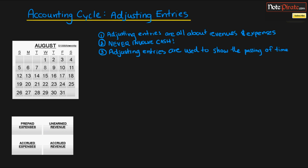In the last presentation I gave you an idea of how to create adjusting entries for accrued expenses and went behind the theory with an example. If you don't know the theory behind adjusting entries, make sure to check out that first tutorial, because this is a continuation where I'm going to show you an example of how to perform an adjusting entry for prepaid expenses.